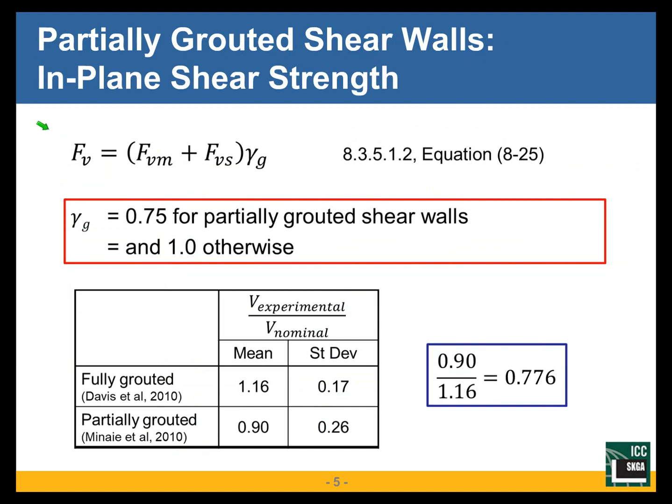Perhaps the biggest change that affects shear walls is that we introduced the partially grouted shear wall factor, gamma sub g. When we went from the 2008 to the 2011 masonry code, we eliminated the one-third stress increase. When we eliminated that, we took a close look at all allowable stresses and did some recalibration. We changed allowable stress design shear stresses — a huge change. Now, basically, it's the same method as strength design.